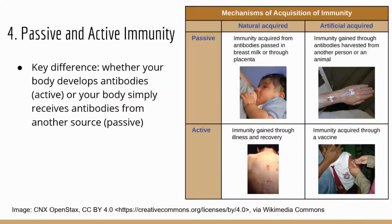Now let's look at the differences between passive and active immunity. These terms can be very confusing. The key is to remember whether your body makes the antibodies or receives them from another source. If your body makes its own antibodies, that's active immunity — you are doing the work. If your body simply receives antibodies from a different source, that's passive immunity.